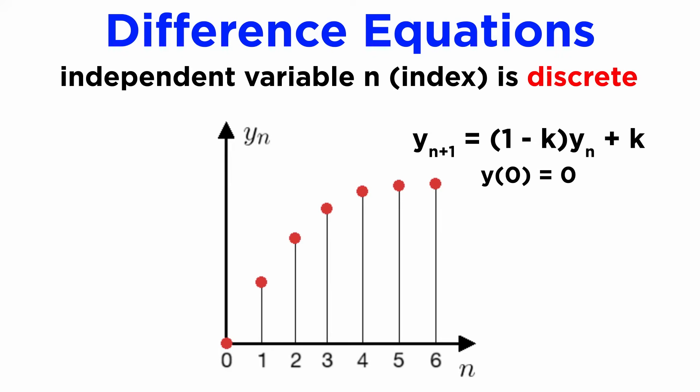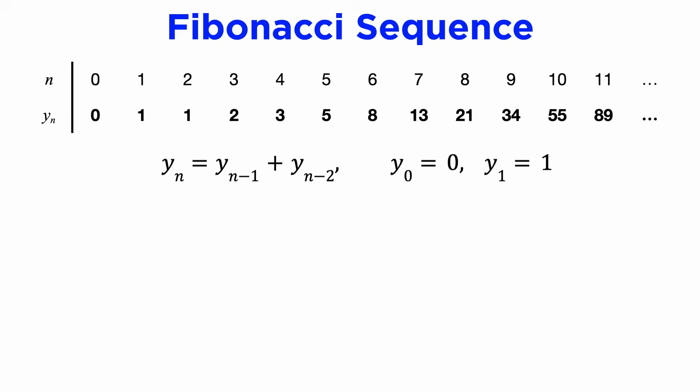But sometimes, this is not the best approach to tackle a problem, and indeed there are some systems that are better modeled using a discrete independent variable, which we'll call the index n. Let's see an example. Consider the famous Fibonacci sequence. This is a sequence of numbers where each term is the sum of the previous two terms, and the sequence starts with 0 and 1.